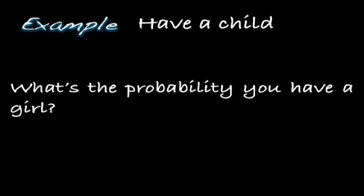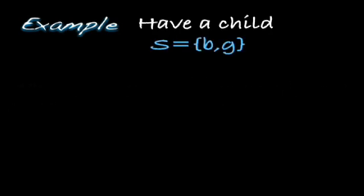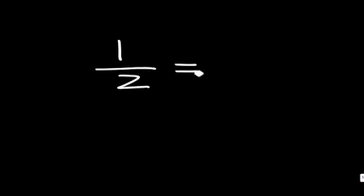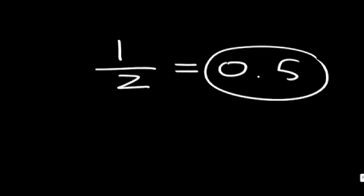What's the probability that you have a girl? There are two possible outcomes: having a boy or having a girl. The event of having a girl is associated with the one outcome, little g. There's one outcome associated with having a girl out of the two possible outcomes. Numerically, this is also 0.5. So when you have a child, the probability that it's a boy equals the probability that it's a girl, both being one-half. Those events are equally likely because the probability is equal — the same value.